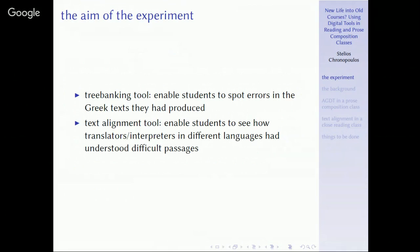The basic practical aim introducing the text alignment tool into the close reading class was to enable students to see where exactly the difficulties of the original text lie, and how translators, interpreters, in different languages, had addressed them.